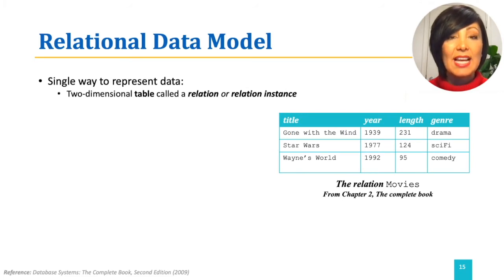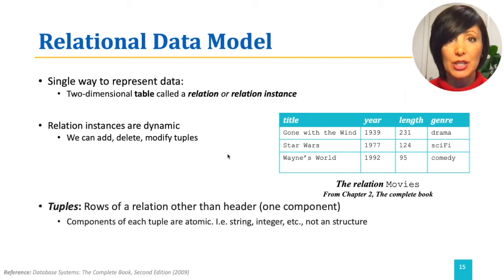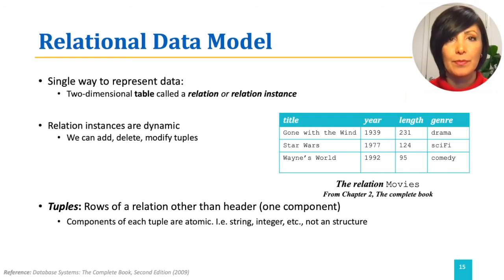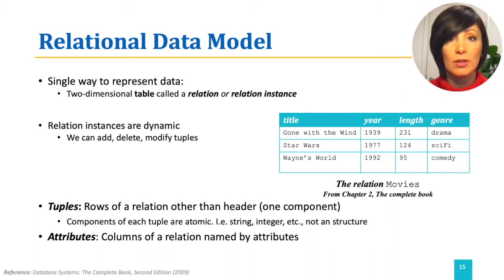An instance of a relation is dynamic. This means that we can add, delete, and modify its tuples. Tuples are rows of the table representing the relation. For example, each row of the table representing the relation movies in the figure is one tuple. Attributes are columns of a relation. Our example relation, movies, has attributes title, year, length, and genre. Each tuple is the collection of values for these attributes.